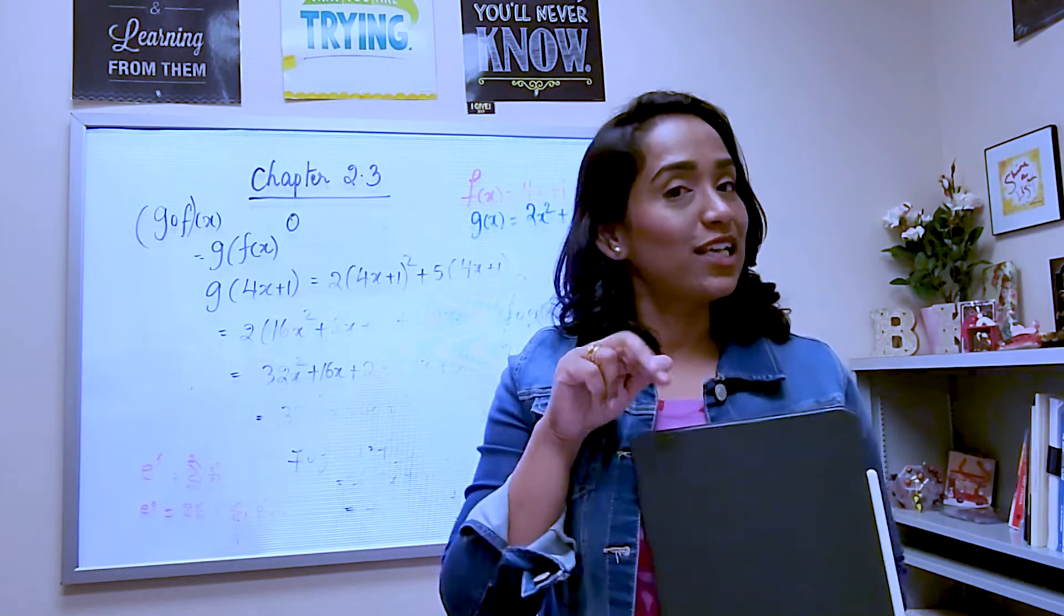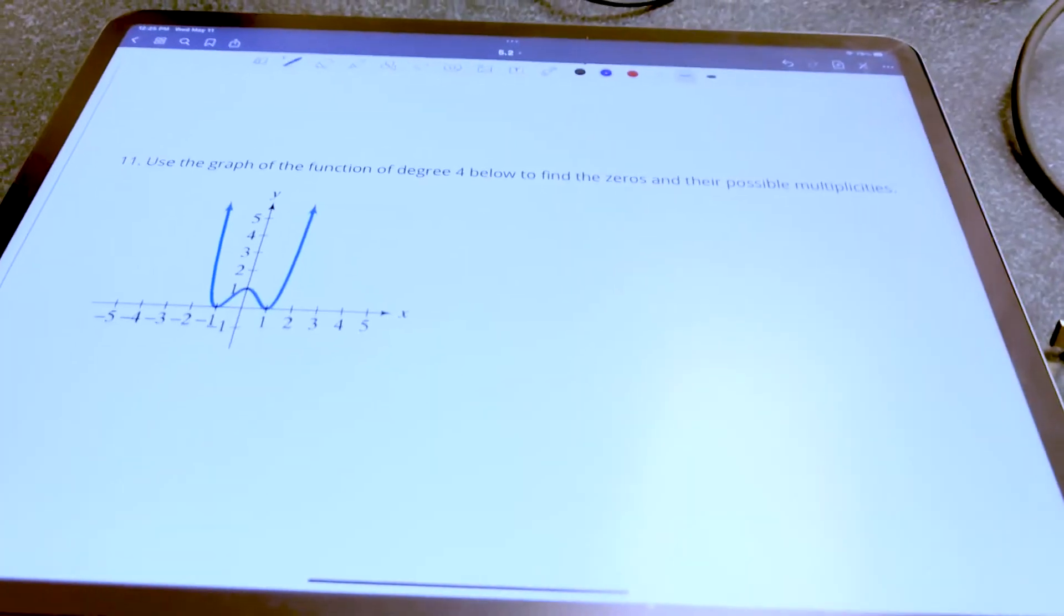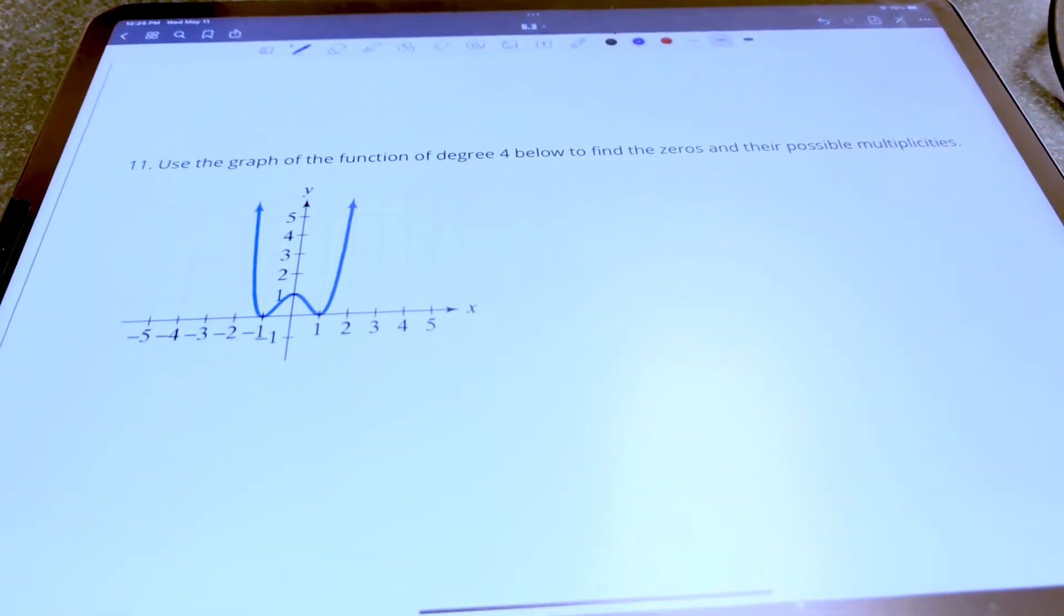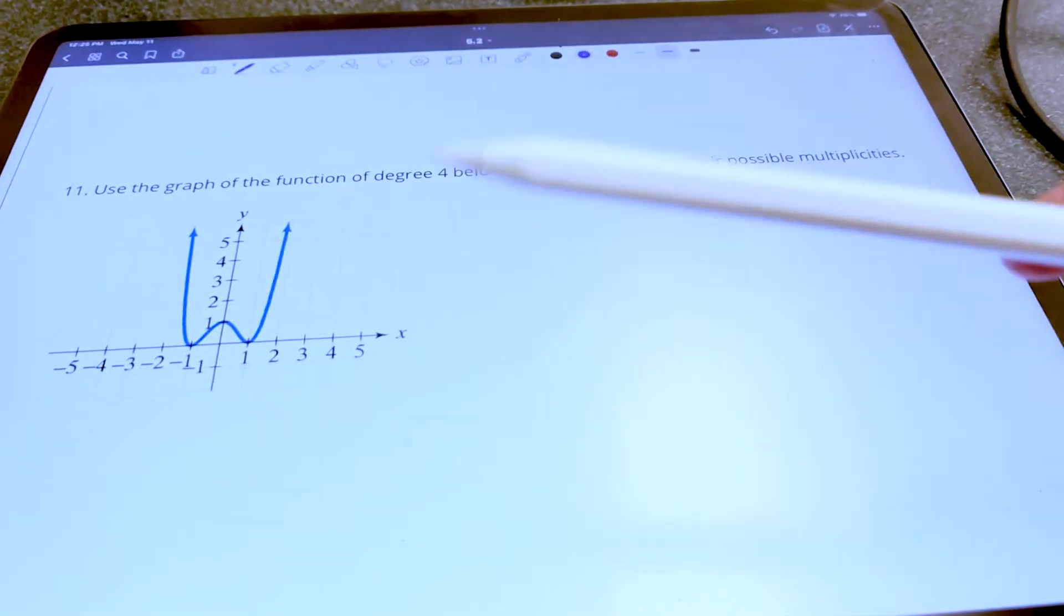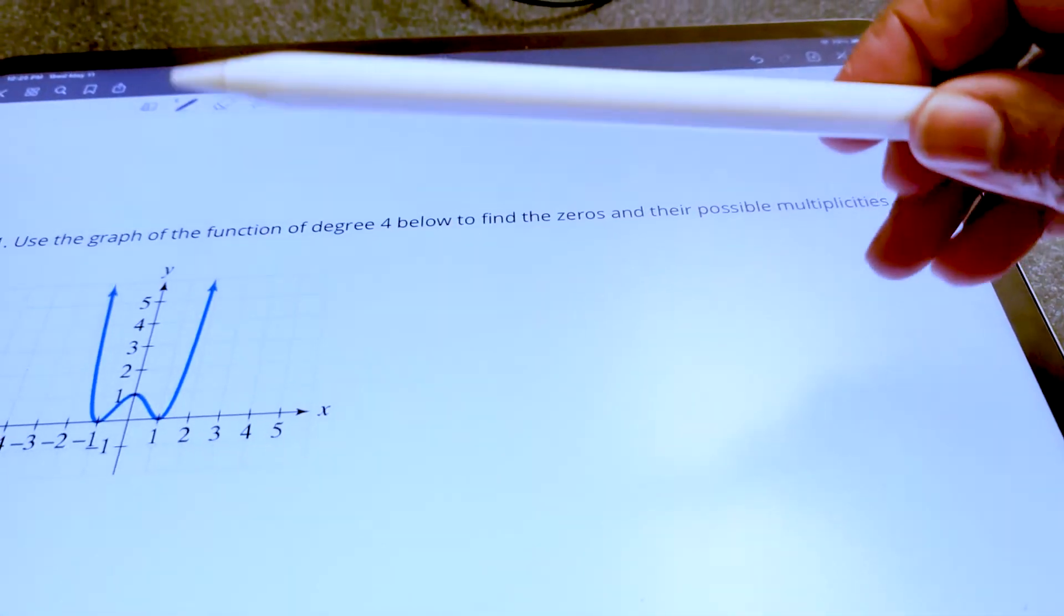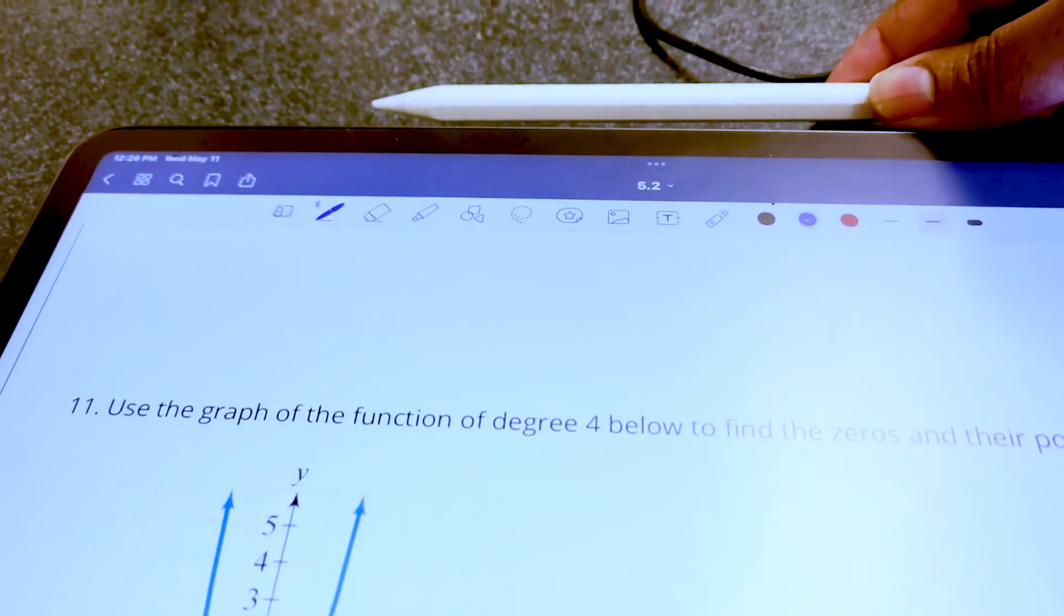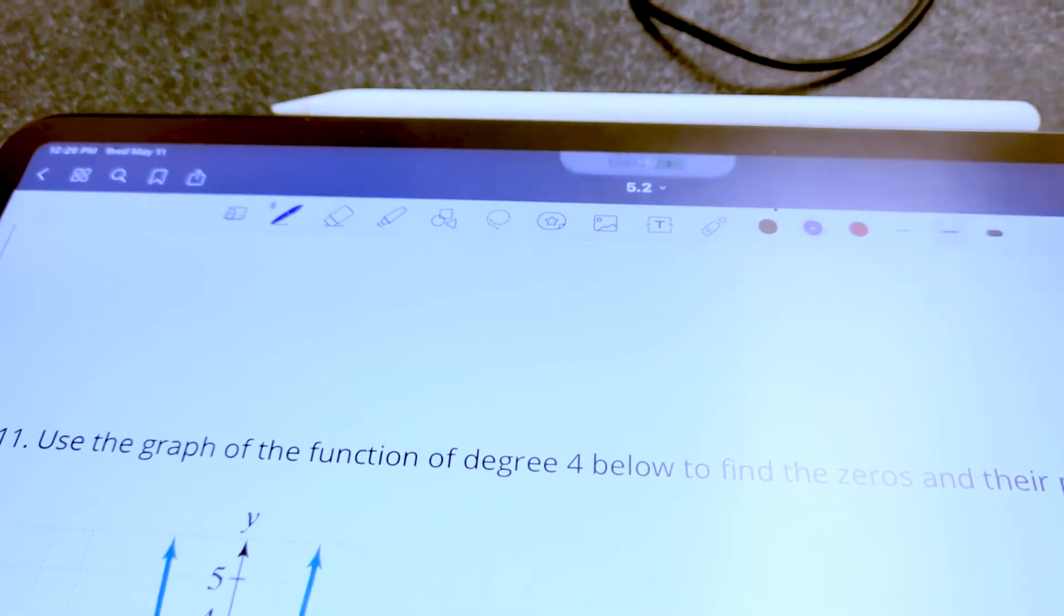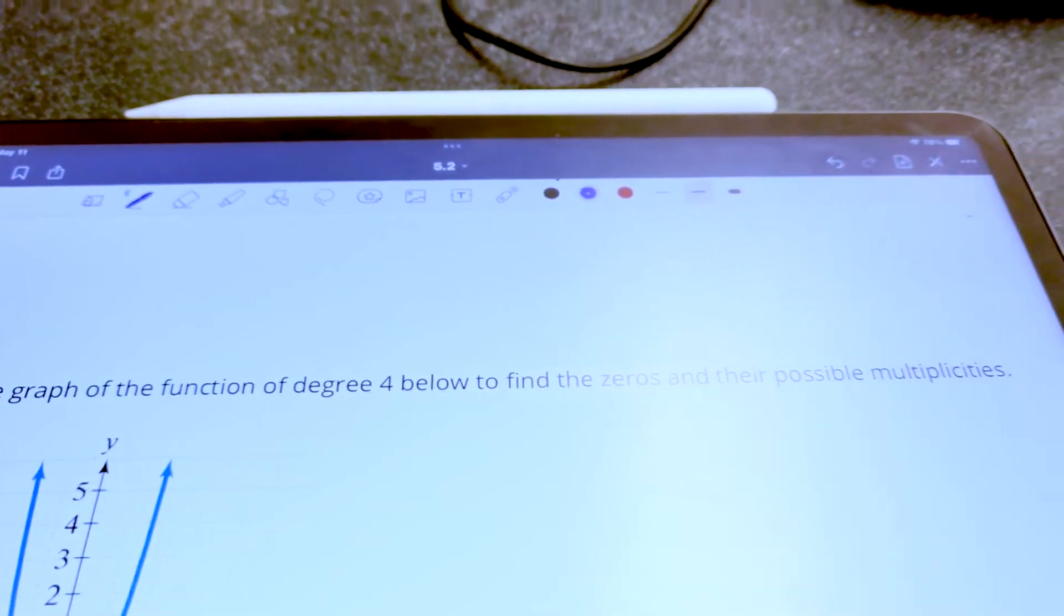So without further ado, let's walk right into my classroom. Here is my iPad. I have a PDF document opened using GoodNotes. Here is my Apple Pencil that I'm going to use to write on my iPad that will be projected onto my screen. The best part of Apple Pencil is I don't have to charge it—it automatically charges as you can see it's 100% charged.